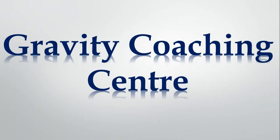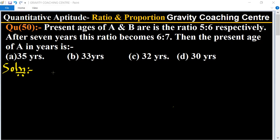Welcome to our channel, Gravity Coaching Center. Quantitative Aptitude, Chapter: Ratio and Proportion, Question number 50. Present ages of A and B are in the ratio 5 is to 6 respectively. After 7 years, this ratio becomes 6 is to 7.